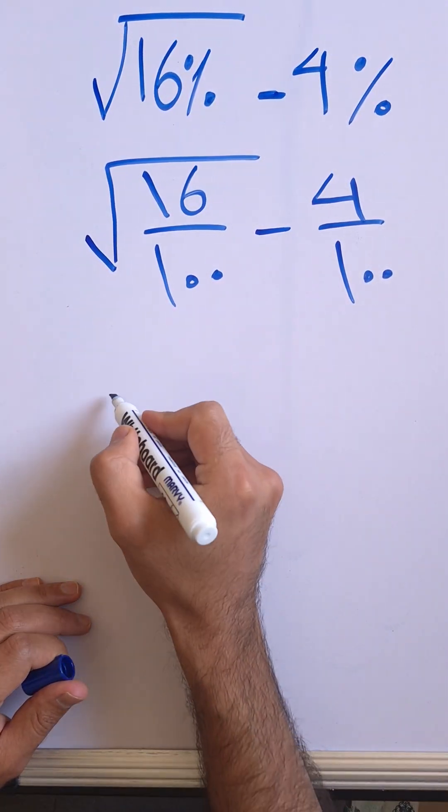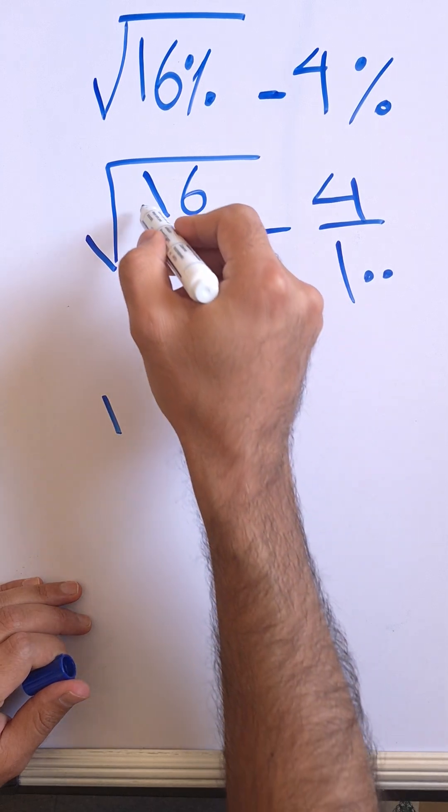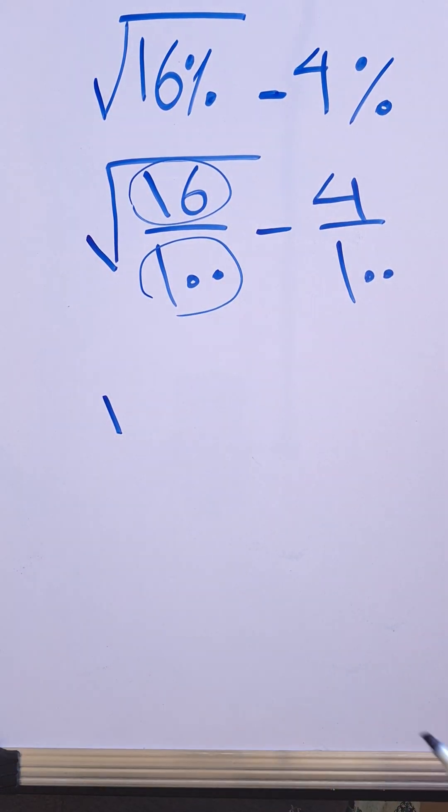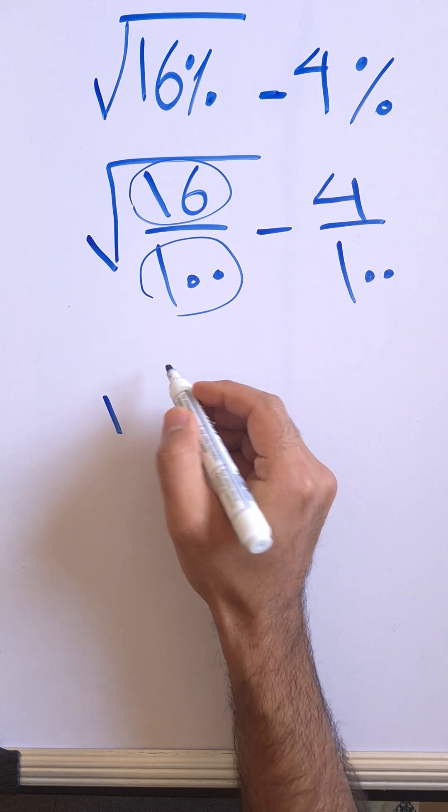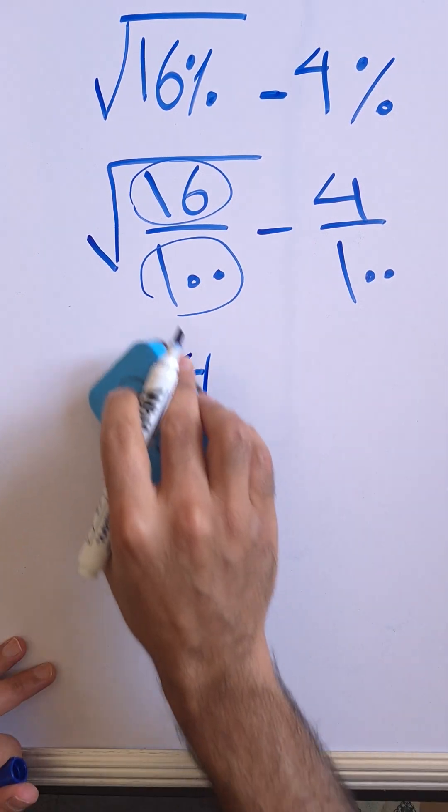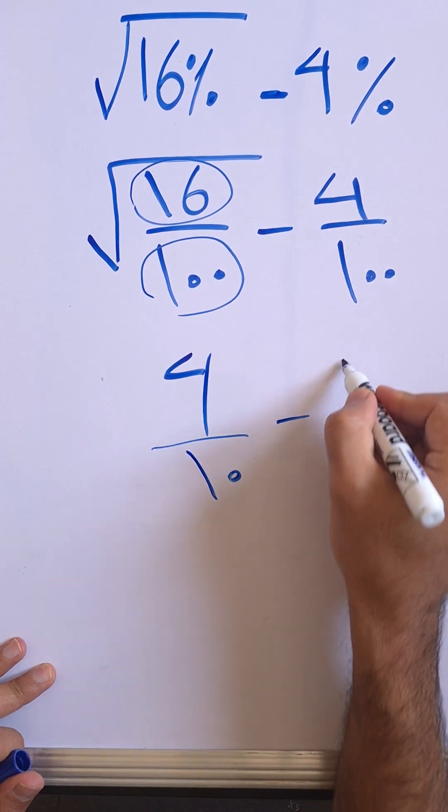So root 16 over 100 is taking the root from the upper side and the lower part. Root 16 is just 4, right? And root 100 is just 10, minus 4 over 100.